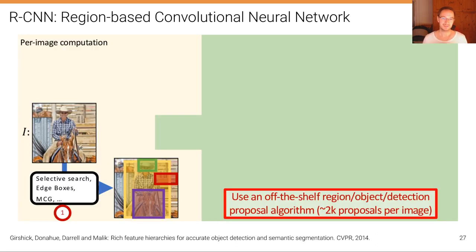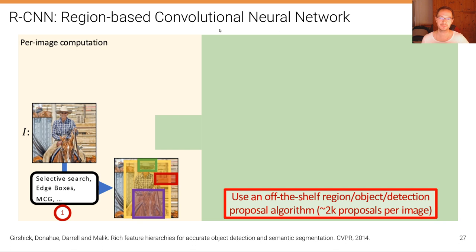Let's look at the details of the first deep learning method for object detection, called RCNN, described in the paper 'Rich Feature Hierarchies for Accurate Object Detection and Semantic Segmentation.' RCNN stands for region-based convolutional neural network. The idea is simple: we compute proposals — these regions — and then for each region we apply a convolutional neural network classifier. We use an off-the-shelf region proposal algorithm first.